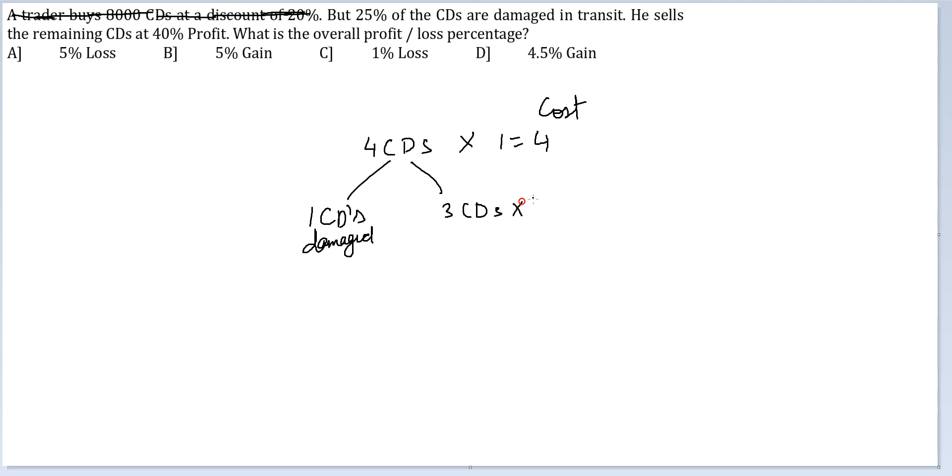So SP would be 3 × 1.4, which is equal to 4.2. This is your sales value. Therefore, your profit percentage will be 0.2 by 4 into 100. You cancel this and get 20 by 4.